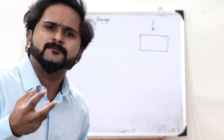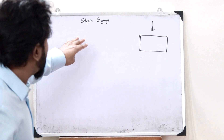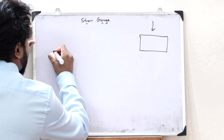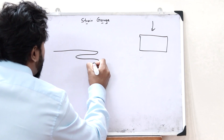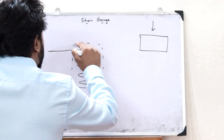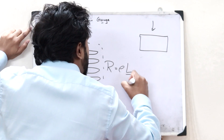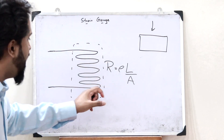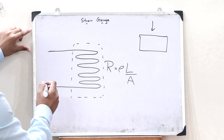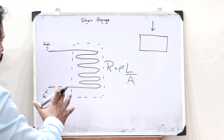So how do we measure the strain? To measure strain, we use a device referred to as a strain gauge. The construction of a strain gauge is very simple. We take a particular conductor and wind it into a particular shape. The resistance of this conductor is given as R = ρL/A, where L is the length, A is the area of cross section, and ρ is the resistivity. These two ends are the leads, across which we obtain the resistance of the conductor.